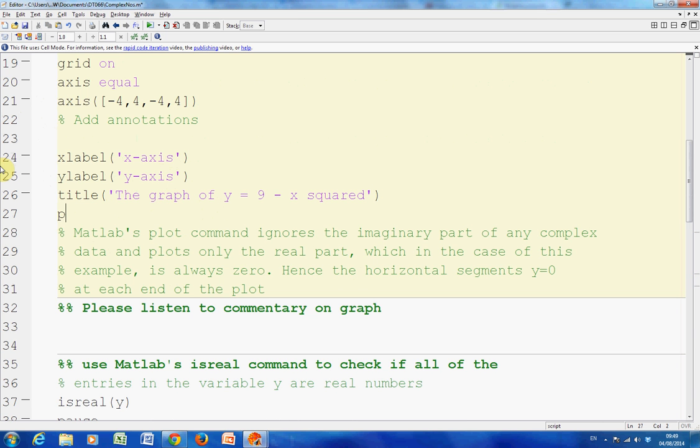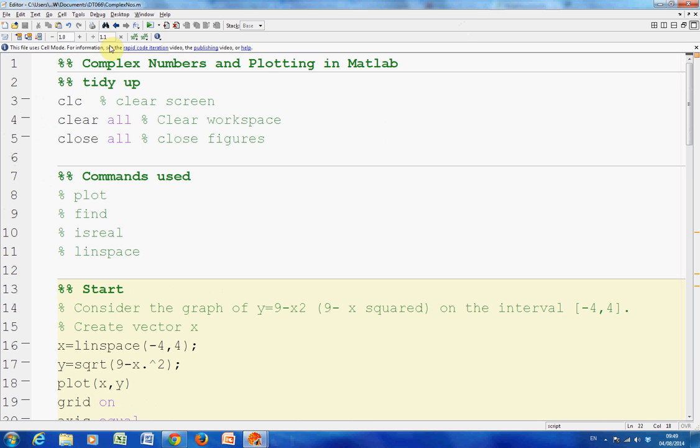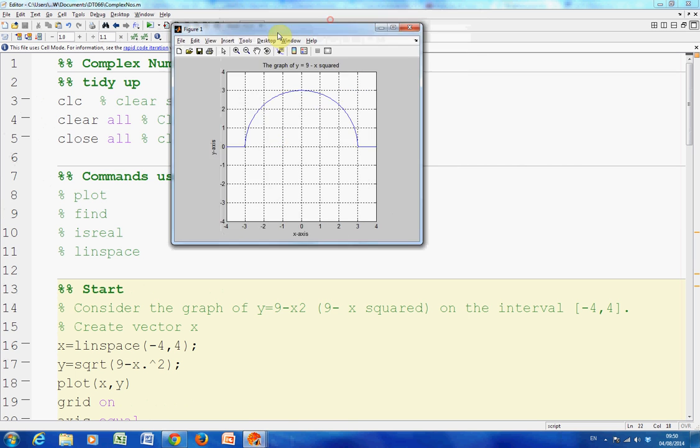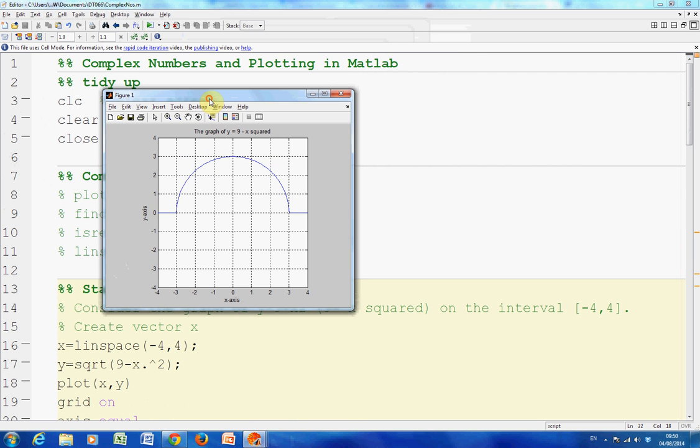We are going to plot and add annotations. Just before I run it, I am going to put in a pause there. So just save that and let's go with this bit. There is my graph of y equals 9 minus x squared.